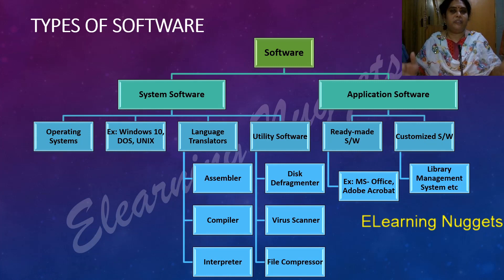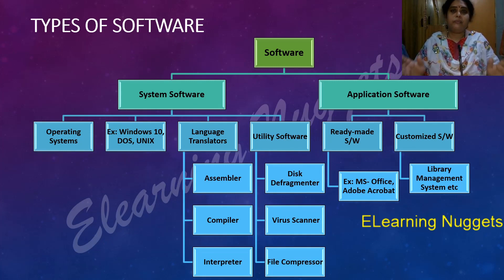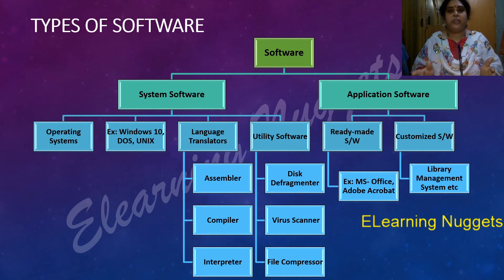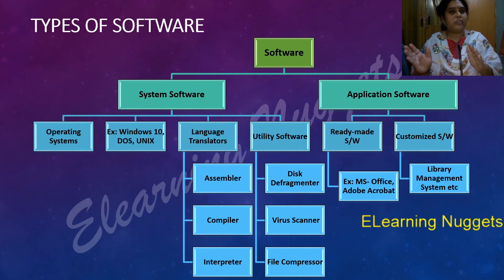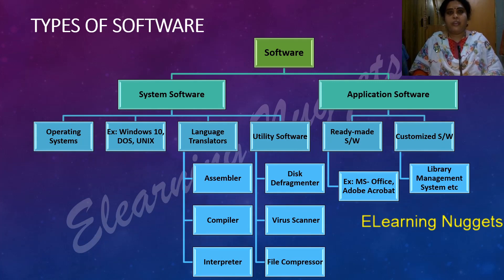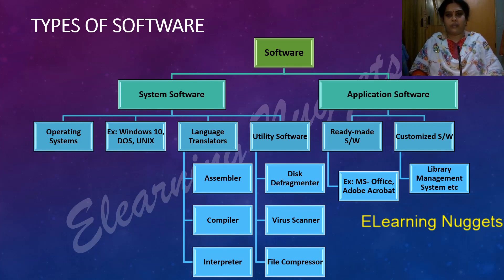To summarize: hardware is the physical parts of the computer; software is the instructions given to the computer; a group of programs comprises software; the operating system acts as an interface between hardware and the user; software is divided into system software and application software; system software includes operating systems, language translators, and utility software; application software includes ready-made and customized software. For your First PU exam, these definitions may come as one-mark questions. Thank you for watching — if you like this video, please like and subscribe.